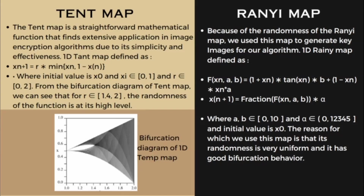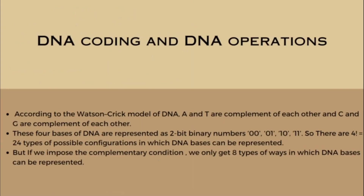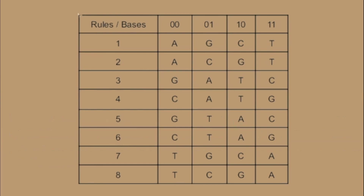Now let's see how DNA encoding works in this algorithm. DNA has 4 bases: A, T, G, and C. According to the Watson-Crick model of DNA, A and T are complements of each other, and so are C and G. If we assign the DNA bases to 4 binary numbers — 00, 01, 10, and 11 — we get 24 types of possible configurations. But if we impose the complementary condition according to the Watson-Crick model, we only get 8 types of ways, and these are the 8 types we are going to use in this algorithm.